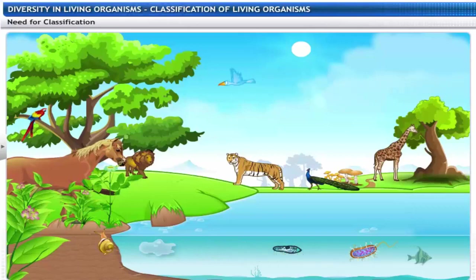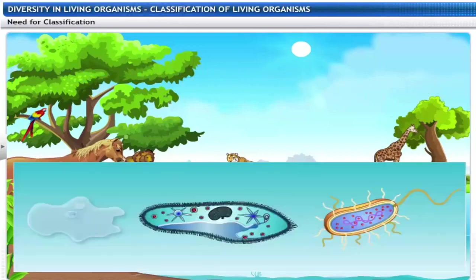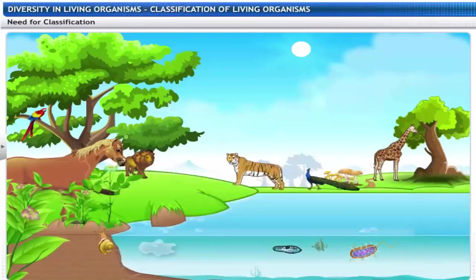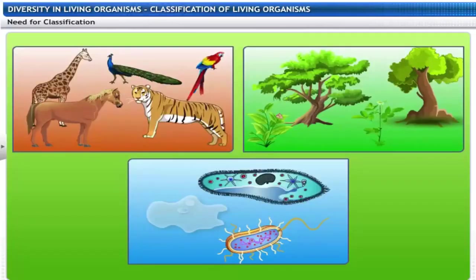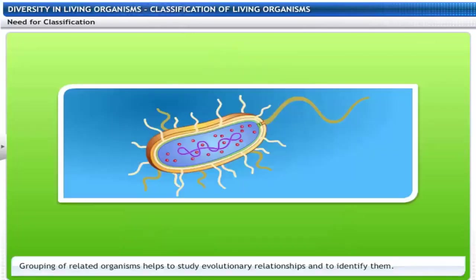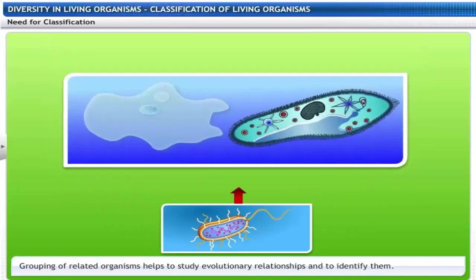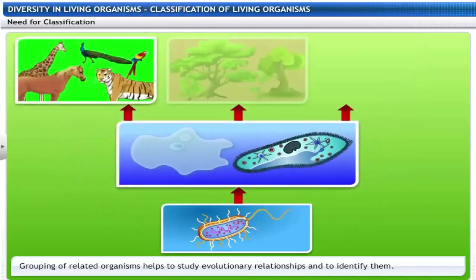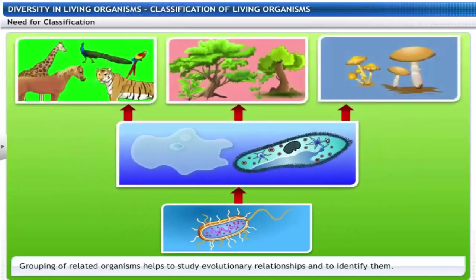Organisms differ in form, structure and mode of living. So they need to be grouped according to their similarities. The grouping of related organisms helps to study evolutionary relationships and to identify them.